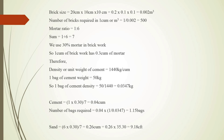Now we find the cement required for 1 cubic meter of brickwork. Cement equals 1 × 0.30 divided by 7, giving 0.04 cubic meters. The 1 is from the mortar ratio, 0.30 is the mortar volume, and 7 is the sum of the mortar ratio. Number of bags equals 0.04 divided by 0.0347, equal to 1.15 bags. So 1.15 cement bags are required for 1 cubic meter of brickwork.